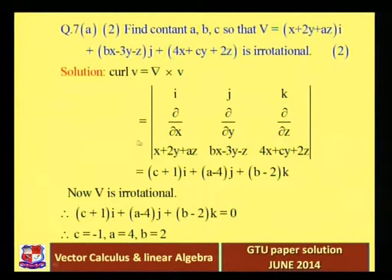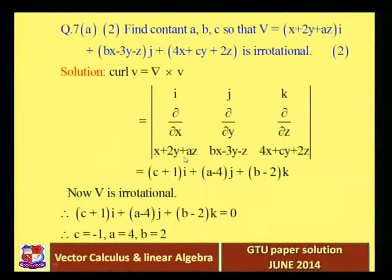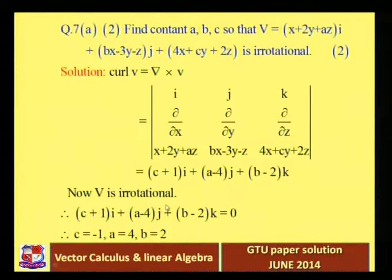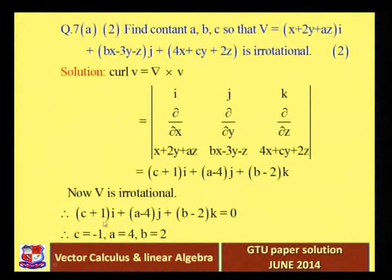For the k component: del/del x of (bx - 3y - z) gives b, minus del/del y of (x + 2y + az) gives 2, so (b - 2)k. Since v is irrotational, (c + 1)i + (a - 4)j + (b - 2)k = 0, giving c = -1, a = 4, and b = 2.